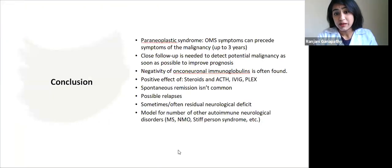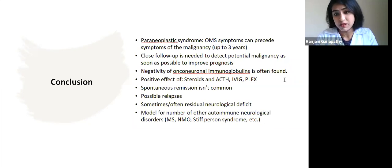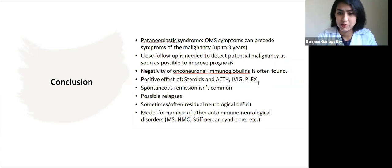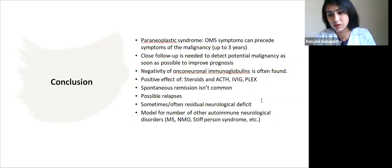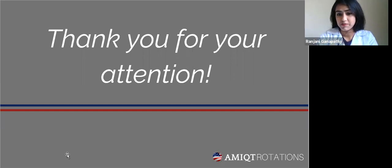To conclude: the paraneoplastic etiology of opsoclonus-myoclonus syndrome can precede the symptoms of the malignancy by up to three years, so if symptoms resolve, we shouldn't brush it aside but continue follow-up. Negativity of immunoglobulins is often found and does not mean there is no underlying neoplasm. There is a positive effect of steroids, ACTH, IVIG, and plasmapheresis. Spontaneous remission isn't common but when it occurs, it's usually in the idiopathic form. Relapses are frequent, and even with treatment, residual neurological deficits may remain. This is an interesting disease because it shares parallels with other autoimmune neurological disorders like MS, NMO, and Stiff Person Syndrome. Thank you all for your attention — feel free to ask me any questions.